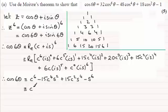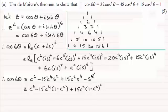So what we've got here is c⁶ - 15c⁴(1 - cos²θ) + 15c²(1 - cos²θ)² - (1 - cos²θ)³.